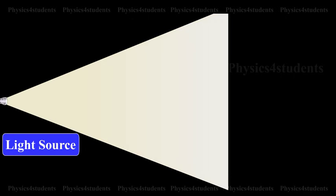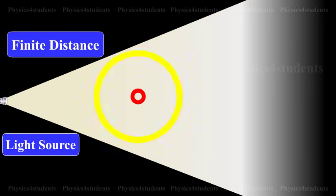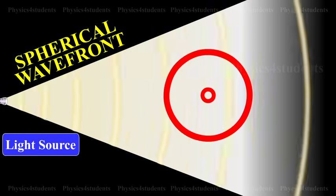A point source of light at a finite distance in an isotropic medium. Isotropic medium is the medium in which the light travels with the same speed in all directions. It emits a spherical wavefront.